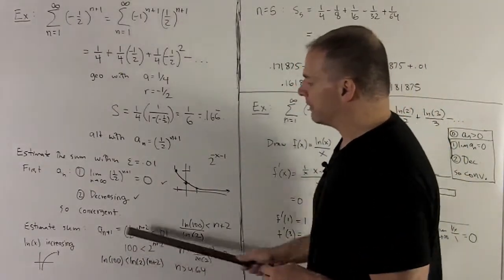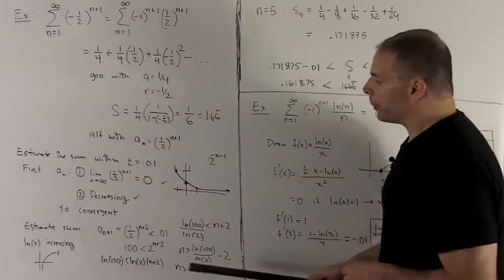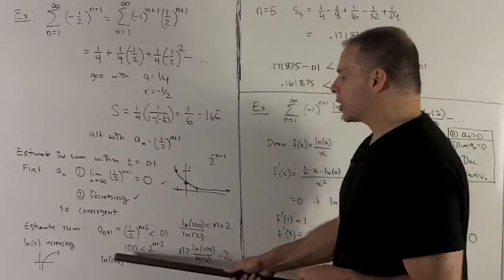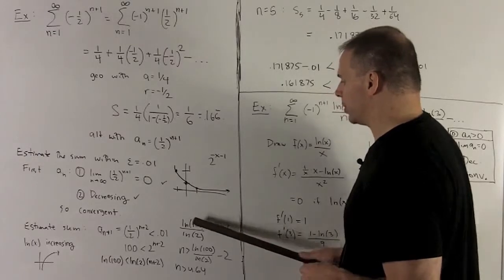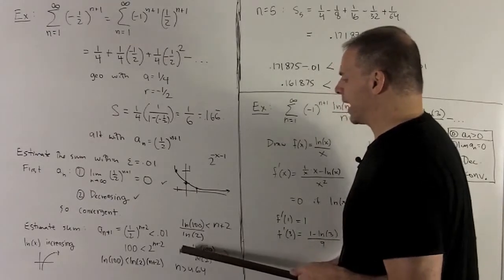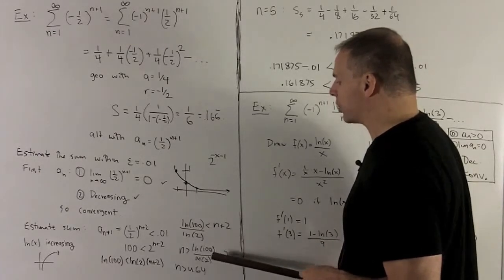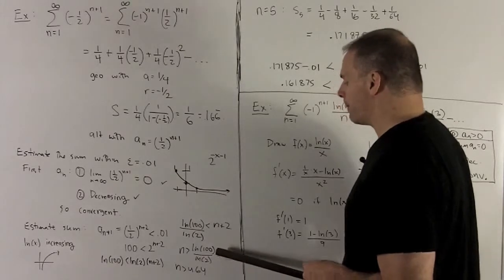Now I can just play with this to figure out a good number. So I'm going to divide by natural log of 2 and then push the 2 to the other side, and that's going to leave me with I need an n bigger than natural log of 100 over natural log of 2 minus 2.